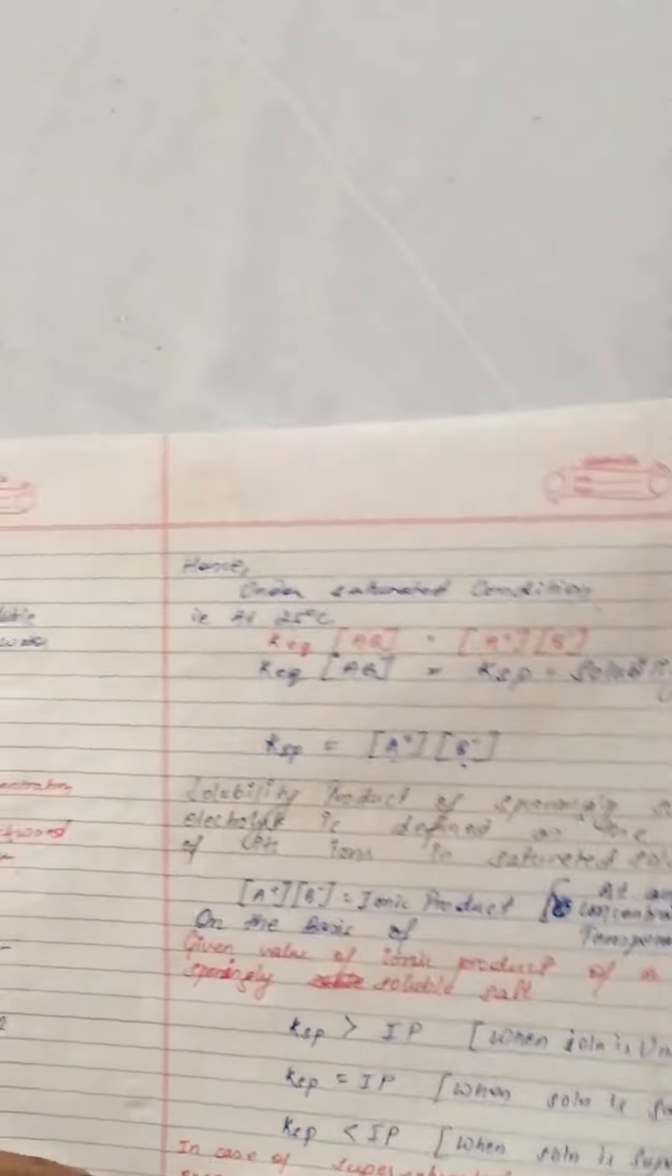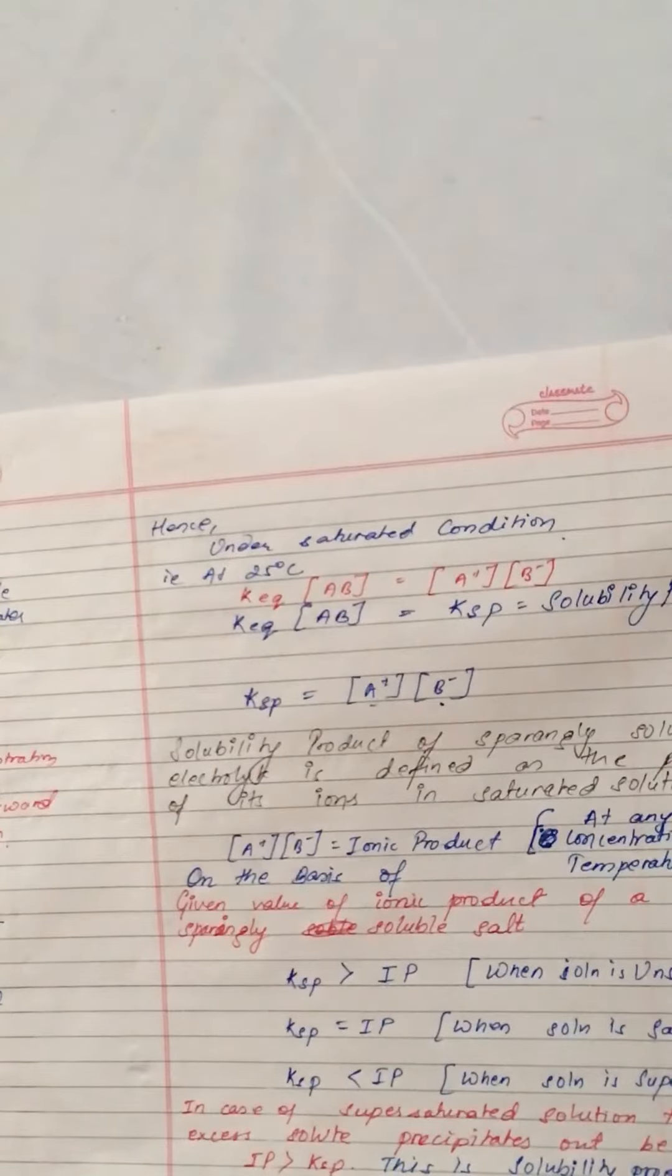Now we are going to learn another important point under saturated condition at 25 degrees Celsius. At equilibrium, AB equals A+ and B-. KEQ equals KSP, that is solubility product. KSP equals the product of A+ and B-.